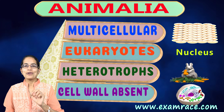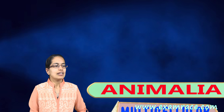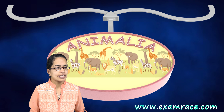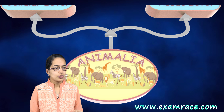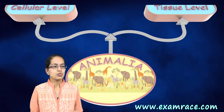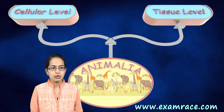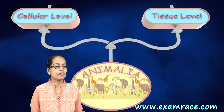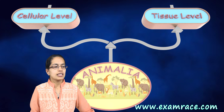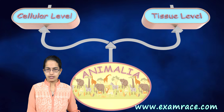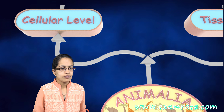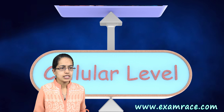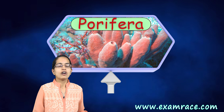Coming on to the classification of the animal kingdom, we can begin by categorizing it into two categories: one is the cellular level of organ differentiation, and the next is the tissue level of organ differentiation. Under the cellular level of organ differentiation, you have Porifera.